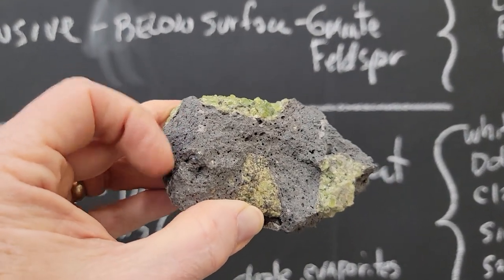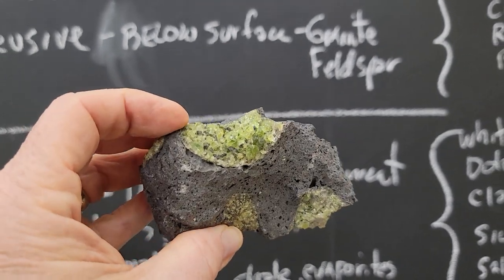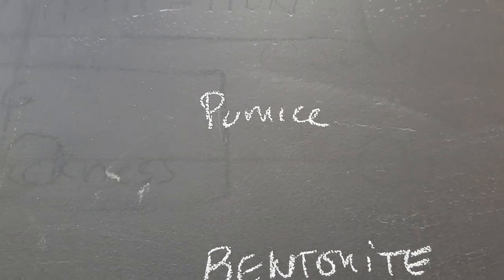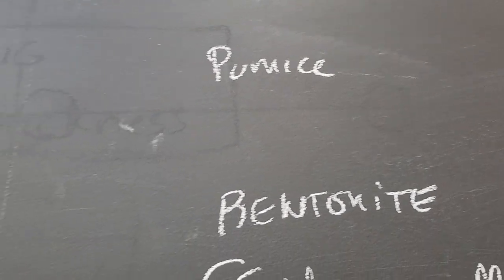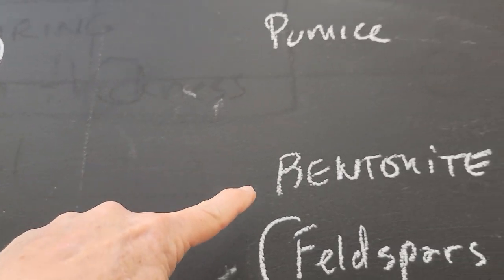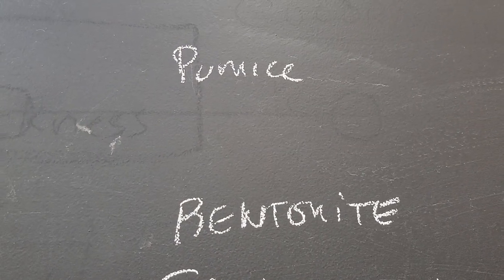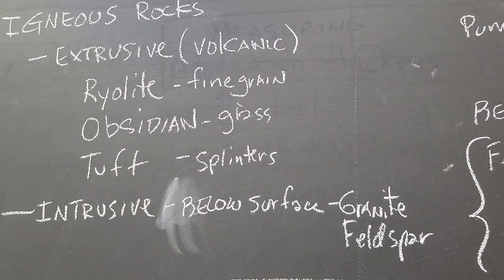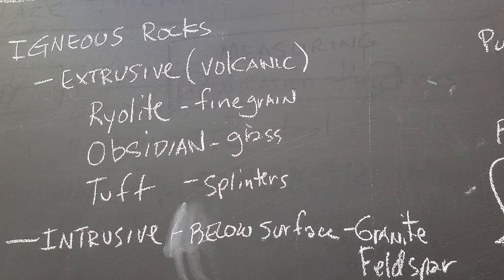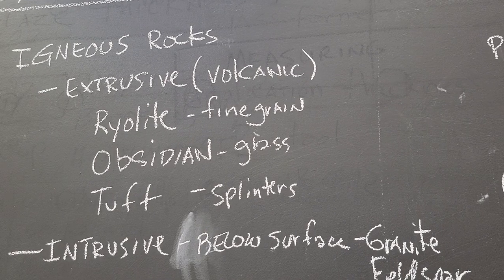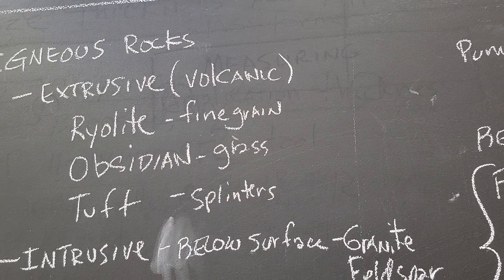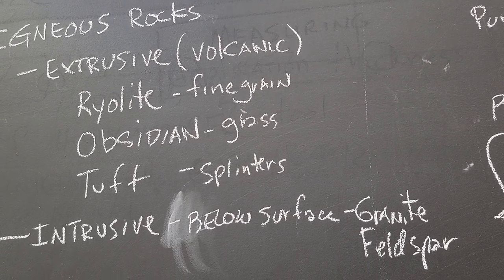Some people take basalt and grind it up to make glazes. You can also purchase pumice stone, which is a volcanic material. Tuff becomes bentonite, which we all use a lot of to suspend our glazes. People also make oil spot glazes with rhyolite and basalt. There are about a million forms in between all these things — I'm just giving you the overview.